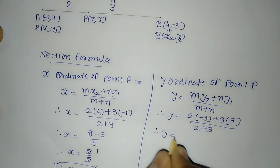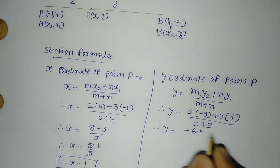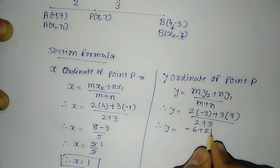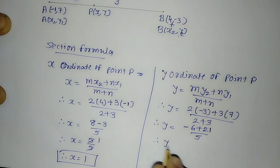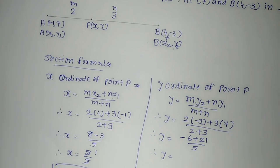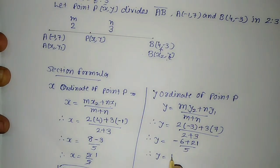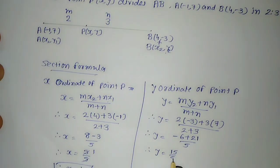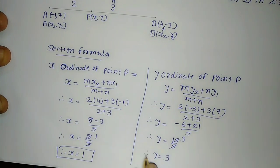Y = (-6 + 21)/5 = 15/5 = 3. Therefore Y = 3.